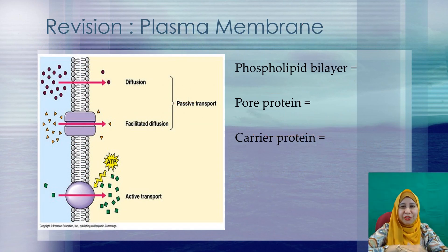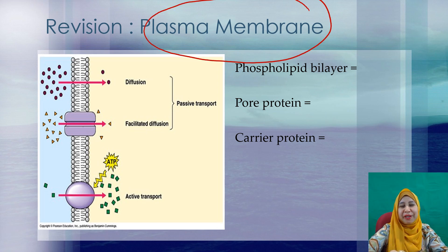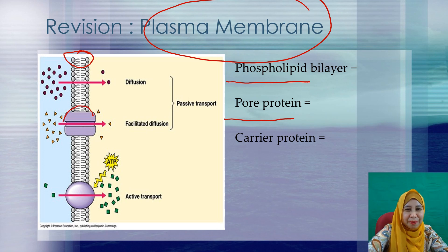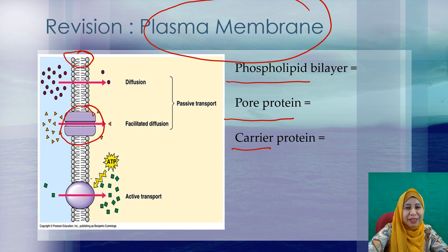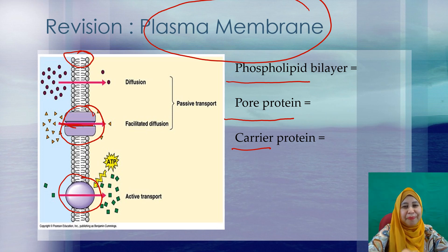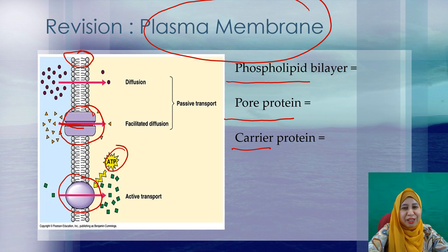Now we will do revision on the structure of the plasma membrane. The first component is the phospholipid bilayer. The next one is pore protein, and the last one is carrier protein. You can identify the pore protein by the pore visible on it. For the carrier protein, you will see that there is ATP — the energy that binds to the protein.